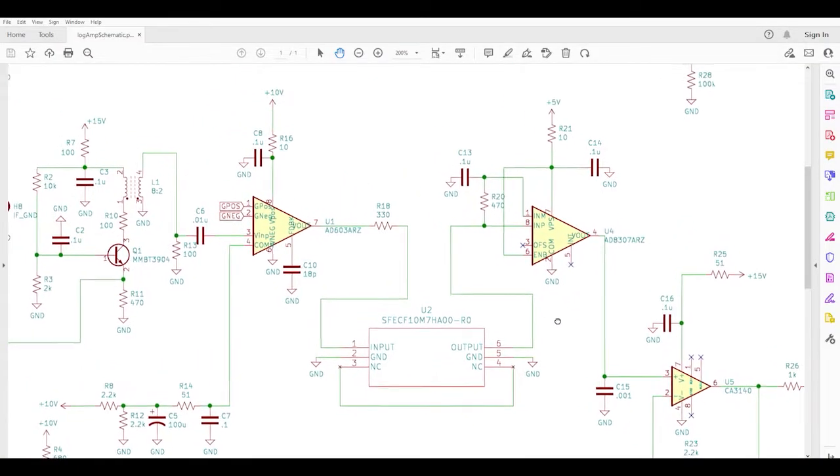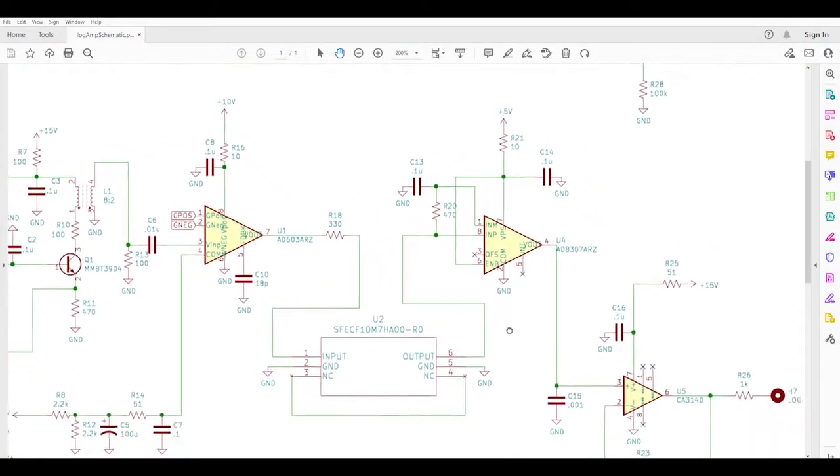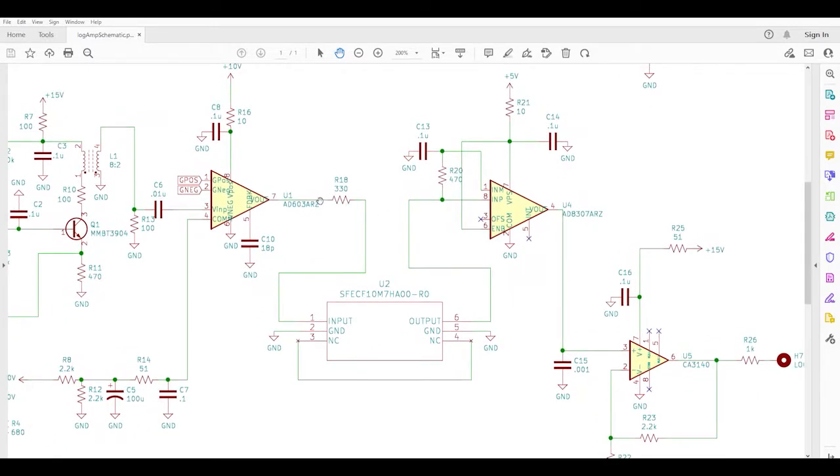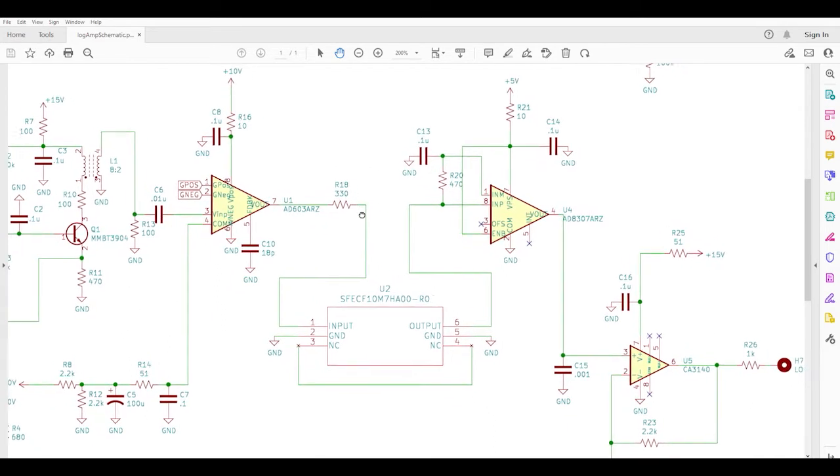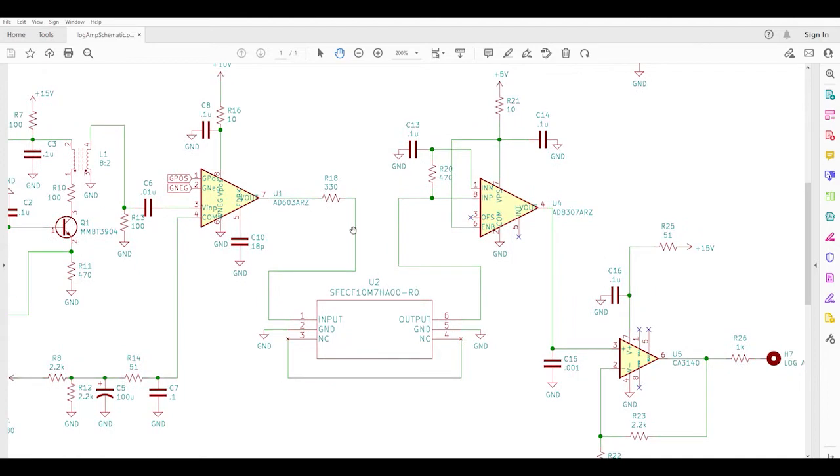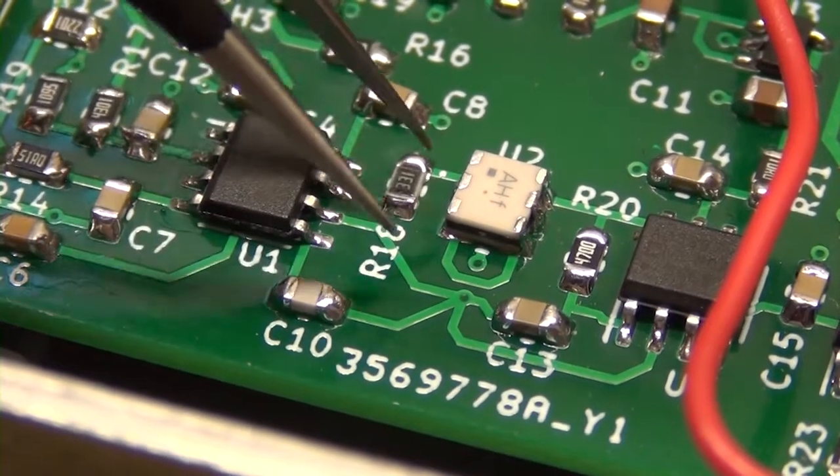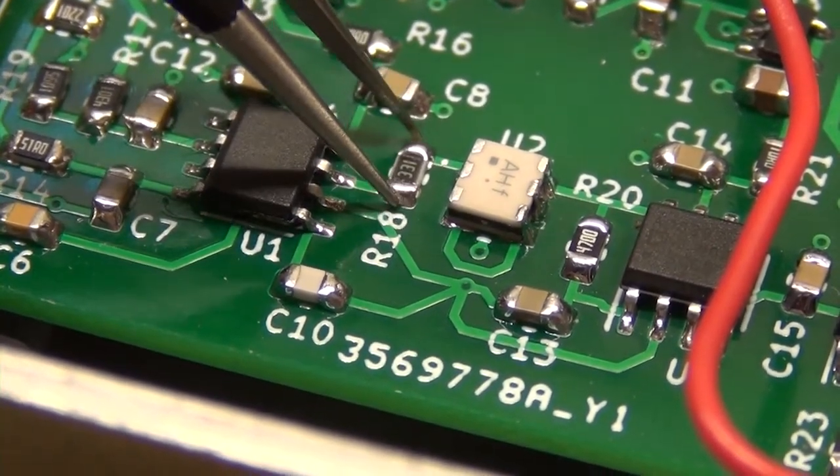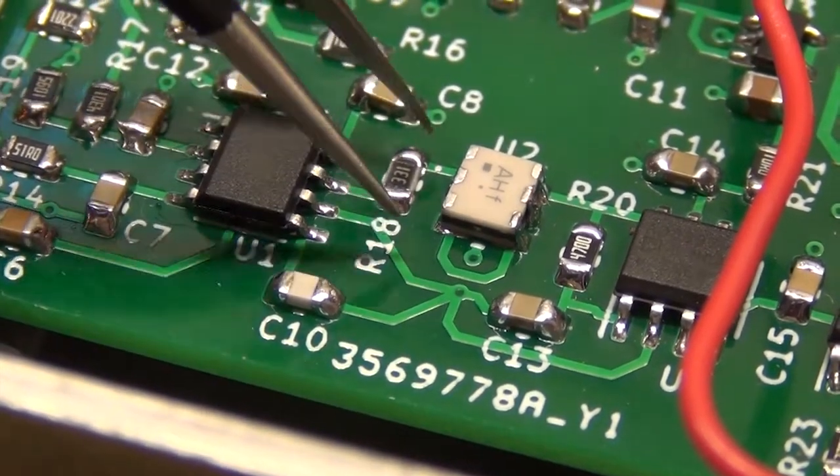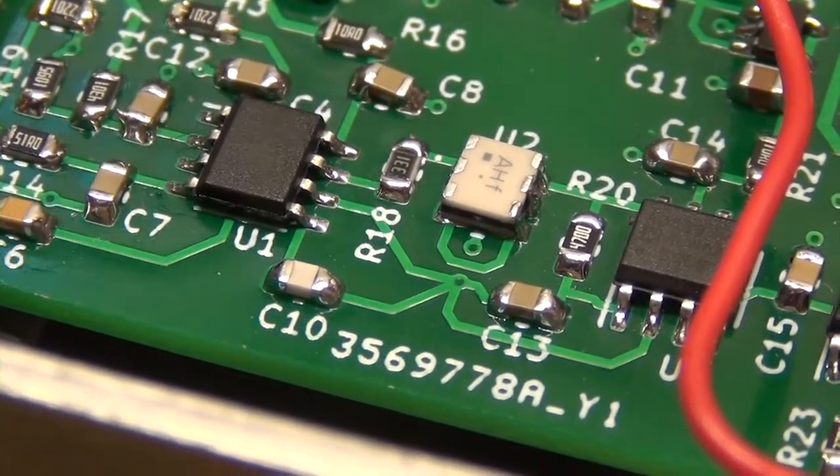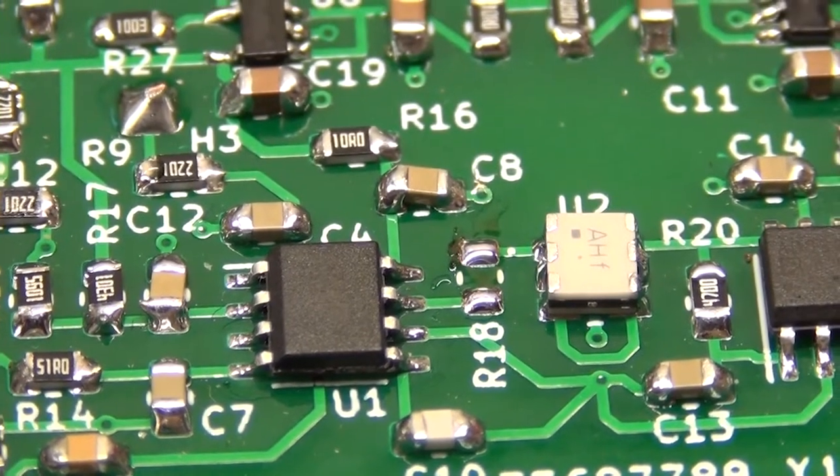As it turns out, I've got a pretty easy way to interrupt the signal flow and isolate just the AD8307 log amp and downstream op amps. I can remove R18. It's a 330 ohm resistor that's used along with R20 to impedance match the ceramic filter. And here is R18. I've got good access to it from both sides and I don't even need to remove the board from the chassis to desolder it.